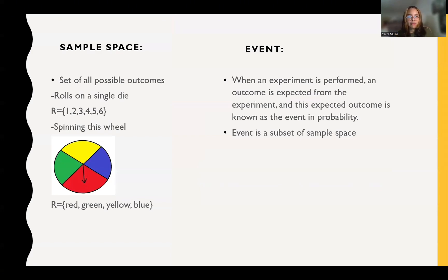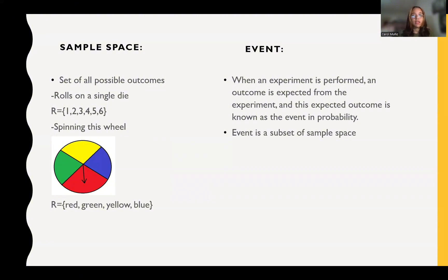Let's go a little bit deeper into what sample space and event are. When we're talking about sample space, we're referring to the set of all possible outcomes. For example, if I'm rolling a die, the outcomes that I can get are either a number from 1 through 6. Or for example, if I'm spinning this wheel, it could be any color from red, green, yellow, or blue.